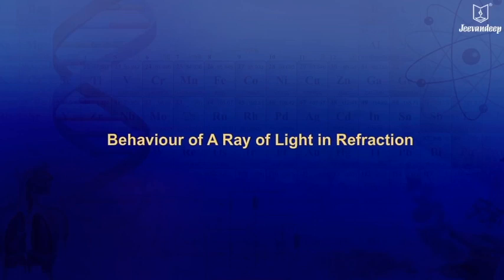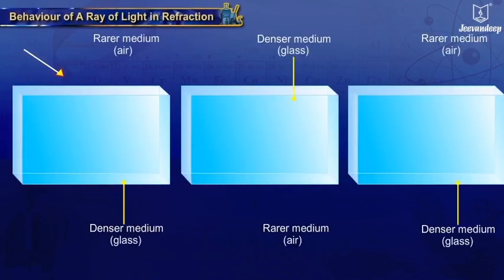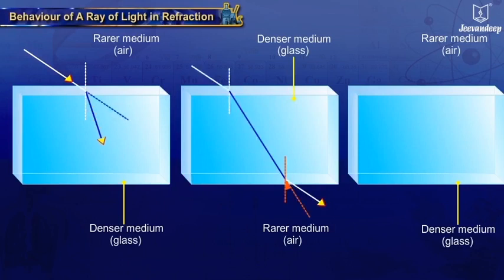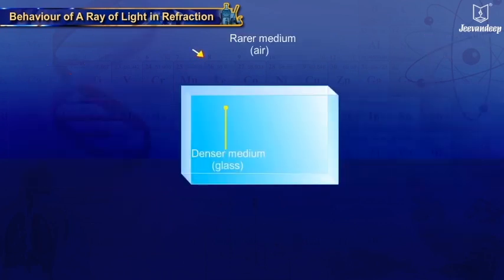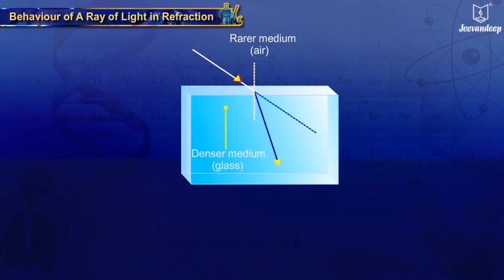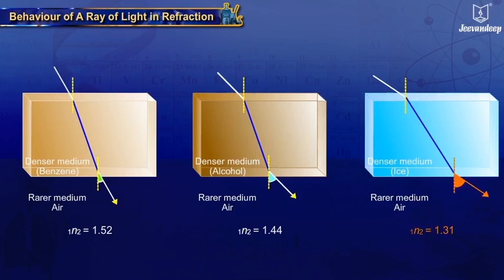Behavior of a ray of light in refraction: Refraction occurs when a light ray changes medium. When a ray of light passes obliquely from an optically rarer medium to an optically denser medium, it bends towards the normal at the point of incidence. Here, i is greater than r, and the refractive index of the second medium, ₁η₂, is greater than one. The greater the value of ₁η₂, the greater is the bending towards the normal.